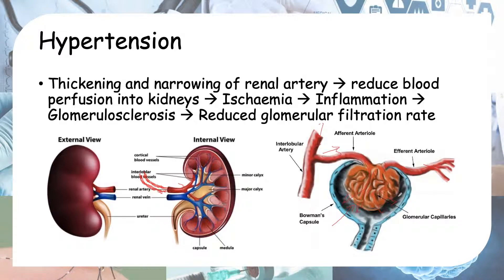As a result of this ischemia, there's inflammation where immune cells come to attack the dying cells undergoing ischemia. This inflammation involves lots of chemicals such as cytokines and inflammatory cells such as macrophages. The end result of all this is something known as glomerulosclerosis.